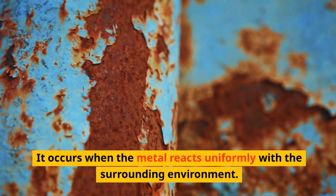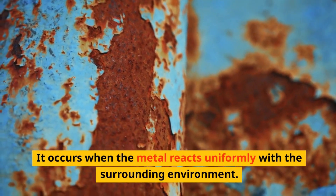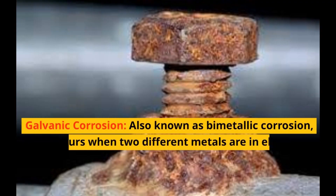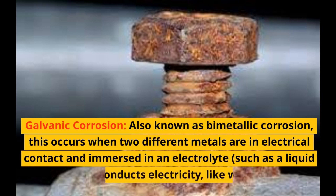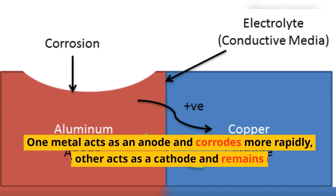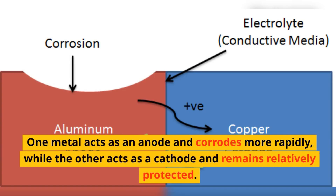Galvanic corrosion, also known as bimetallic corrosion: this occurs when two different metals are in electrical contact and immersed in an electrolyte — a liquid that conducts electricity, like water. One metal acts as an anode and corrodes more rapidly, while the other acts as a cathode and remains relatively protected.